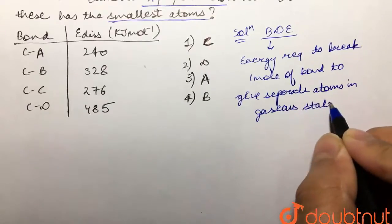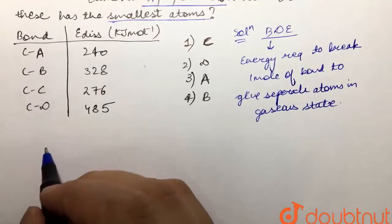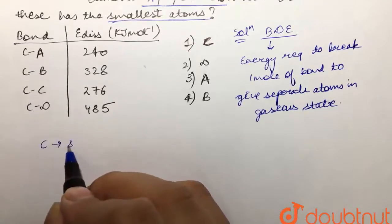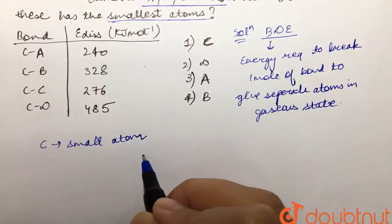Now we know that carbon is common over here, and we know that carbon is a small atom. So it would make a strong bond with the small atom only because they would have effective overlapping.